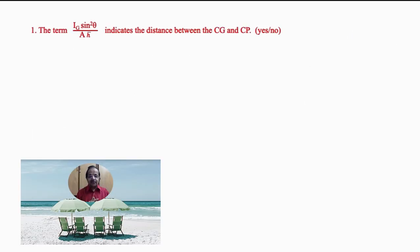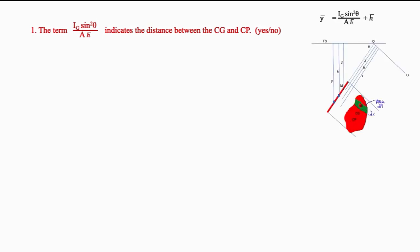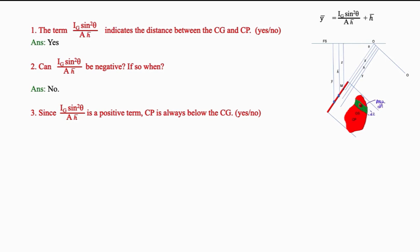Now let us discuss multiple choice questions. The term IG sin²theta by (A H-bar) indicates the distance between center of gravity CG and center of pressure CP — yes or no? From the equation and the figure, Y-bar is the distance of the center of pressure from the free surface and H-bar is the distance of the center of gravity from the free surface. So yes, IG sin²theta by (A H-bar) is the distance between CG and CP. Can this term be negative? No — it is always positive. Therefore, the center of pressure is always below the center of gravity. Yes.